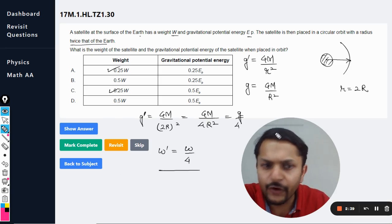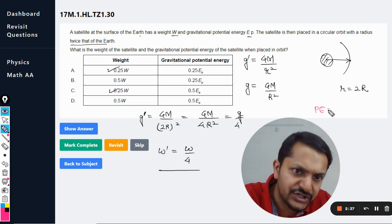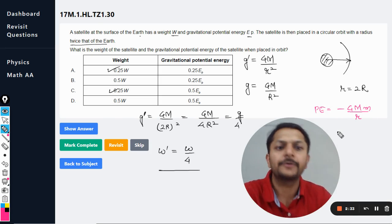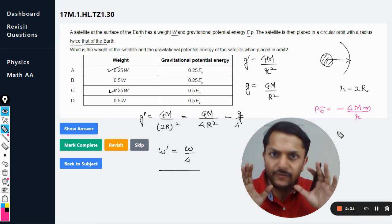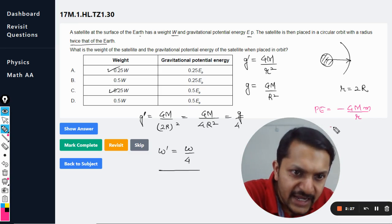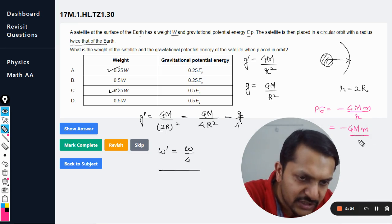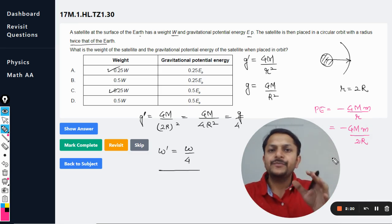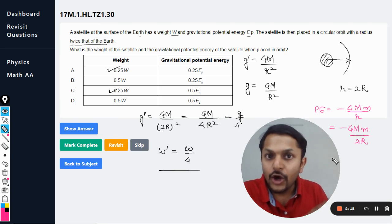So this is done. Now let us move to the gravitational potential energy. What is the formula for the gravitational potential energy? The formula is minus GMm divided by r. Simple, we just know it, we just remember it. So this is the potential energy and now we are going to substitute the value here, like 2r. So this is the potential energy when the satellite is in the orbit.